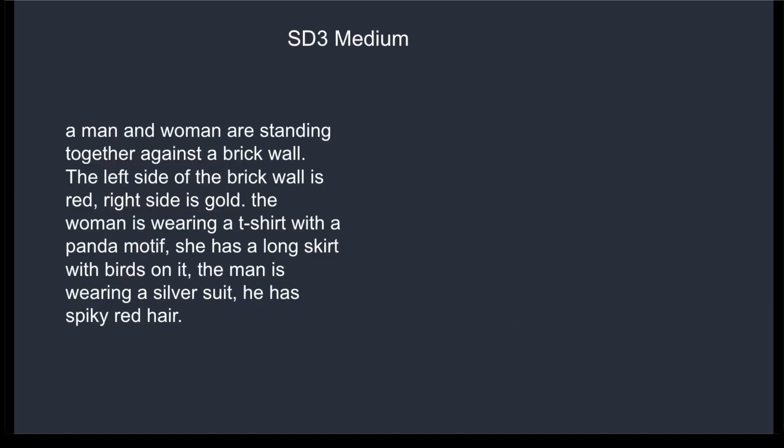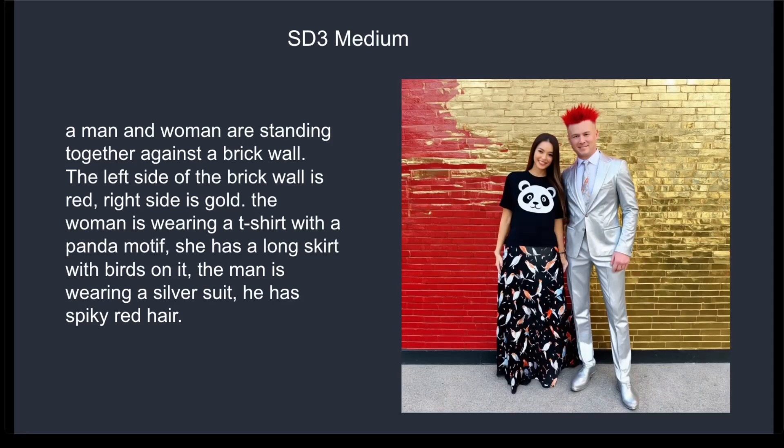Finally, let's test a very difficult prompt to see how well the medium model does. The prompt describes a man and woman standing behind a brick wall that is red on the left and gold on the right. The woman is wearing a t-shirt with a panda and a long dress with birds. The man is in a silver suit with red spiky hair. This is very detail-heavy and difficult for any AI image generator. The medium model generated the image correctly — the wall has the right colors, you can see the panda t-shirt and bird dress on the woman, and the man is wearing a silver suit with red spiky hair. This result just blew me away and further showcases the potential of the SD3 model.